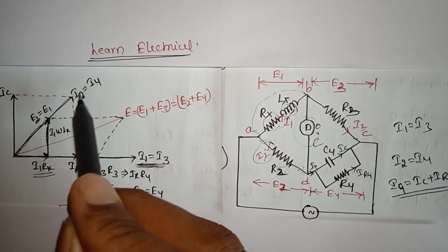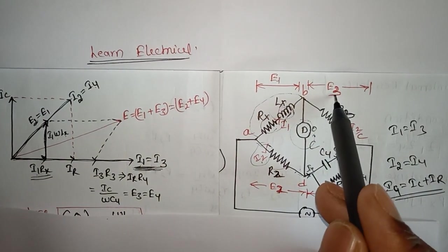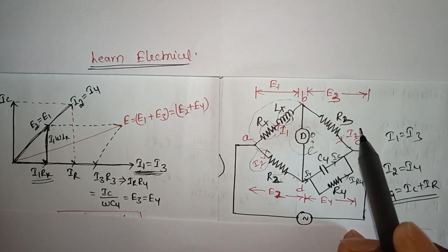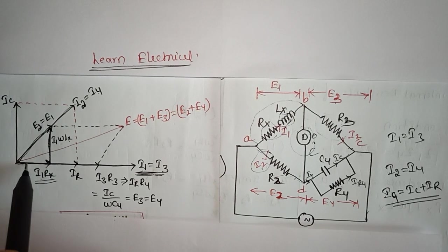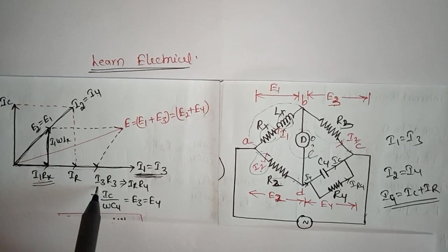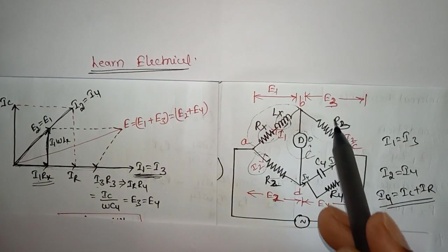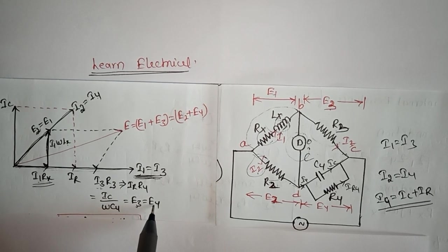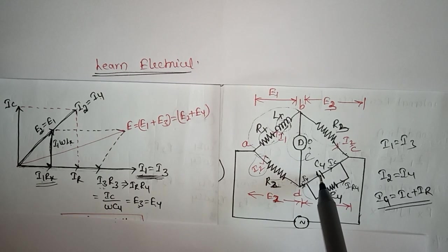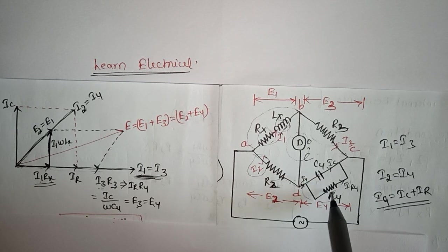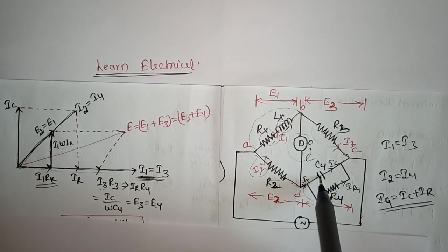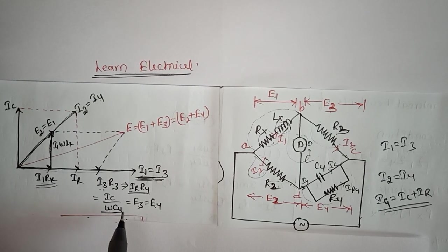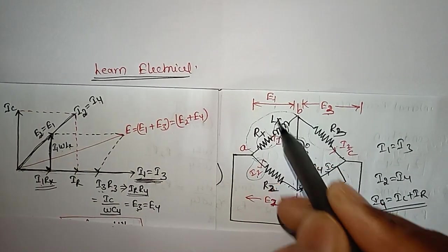E3 = I3·R3 — arm three has only resistance, so I3·R3 is drawn in phase with I3. At balance E3 = E4. For arm four, C4 and R4 are in parallel, so the voltage across each branch is equal: voltage across R4 is Ir·R4 and voltage across C4 is Ic/(ωC4), and E4 is their combination.